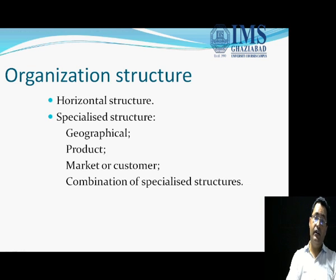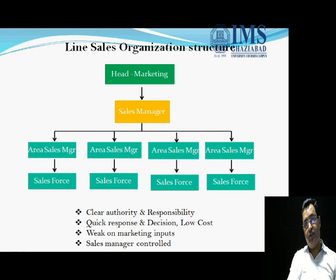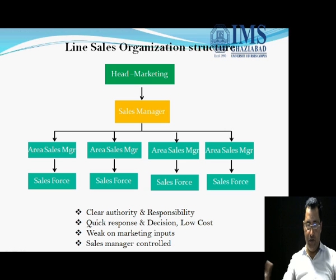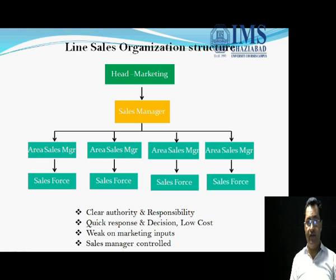Now there are also horizontal and specialized structures. In a line sales organization structure, we have marketing at the top, then a sales manager, then an area sales manager. The number of area sales managers depends on how wide the business is and how diversified — there could be one or more than one.